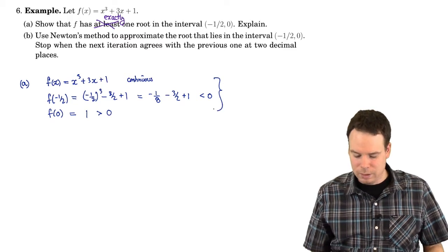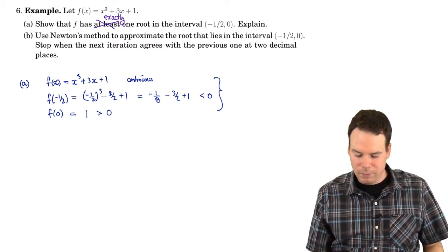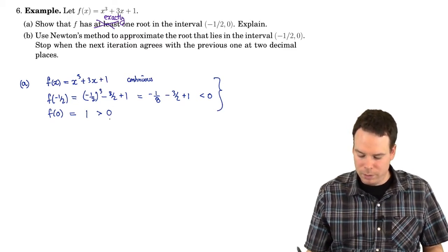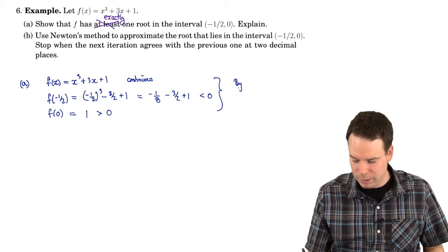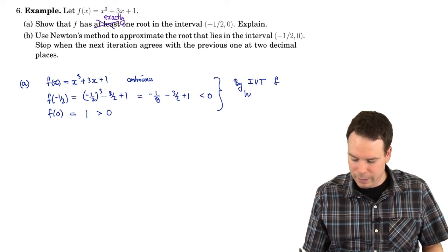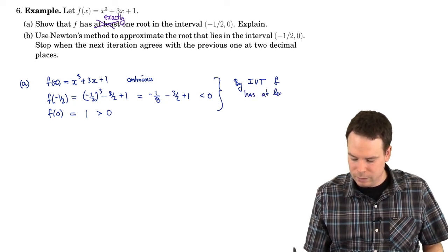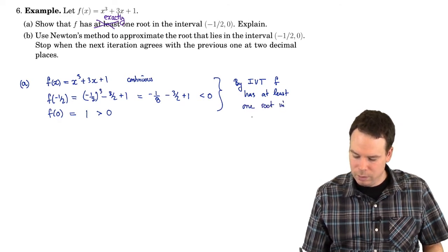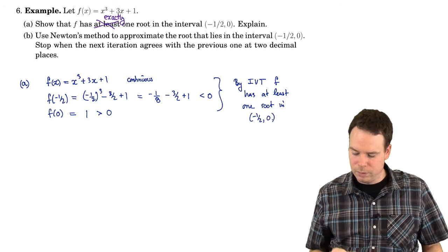So we have that the function is continuous on the interval, negative at one endpoint, positive at the other endpoint, so by the intermediate value theorem, f has at least one root in the interval negative one-half to zero.